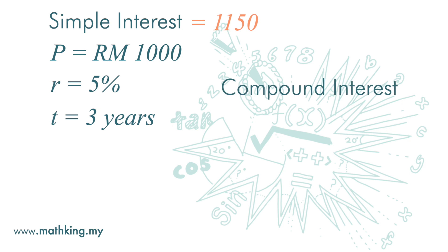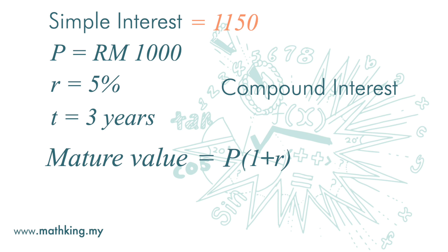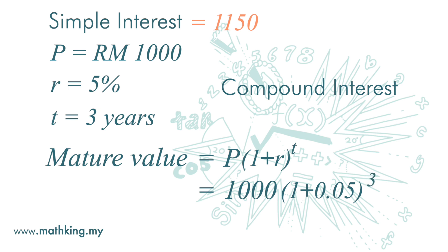For compound interest, the formula is: matured value equals principal times (1 plus interest rate) to the power of T, the time period. So the matured value by the end of 3 years is 1,000 times (1 plus 0.05) to the power of 3, and we get RM1,157.63. There is a difference of RM7.63.